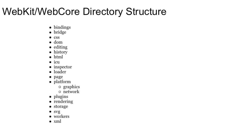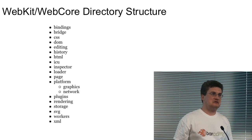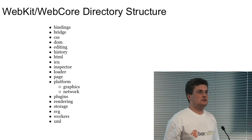The directory structure of WebCore is fairly straightforward. Pretty much all of the naming conventions have been made logical. You can understand what's going on. Bindings, for example, is where all the bindings to JavaScript engines or Objective-C live. DOM deals with DOM, CSS deals with CSS, and so on.